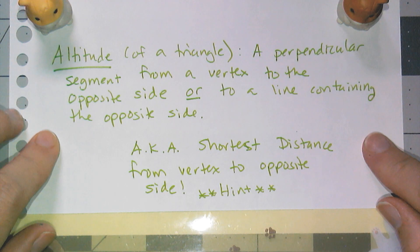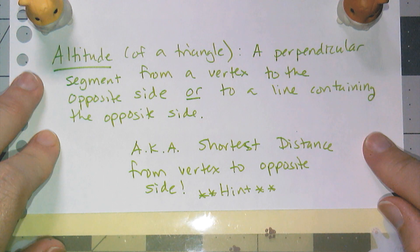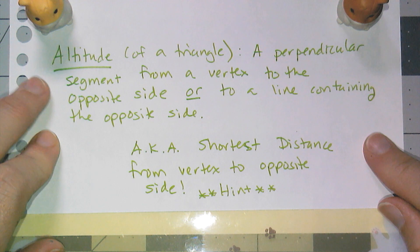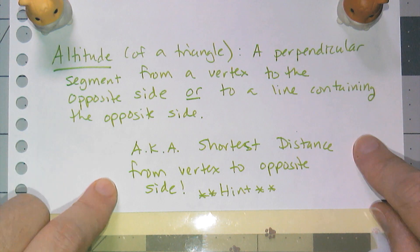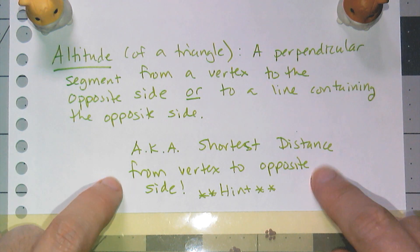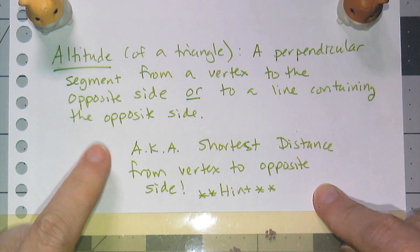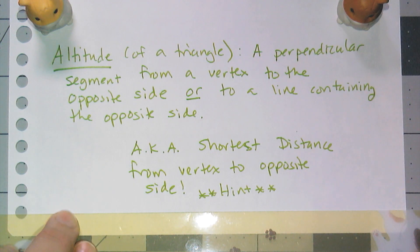The last segment we're going to look at is the altitude of the triangle. It is the perpendicular segment from a vertex to the opposite side or to the line containing the opposite side, also known as the shortest distance from vertex to opposite side. And we know the length of the altitude as being the height of a triangle.